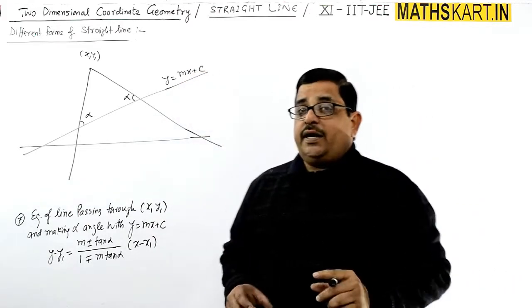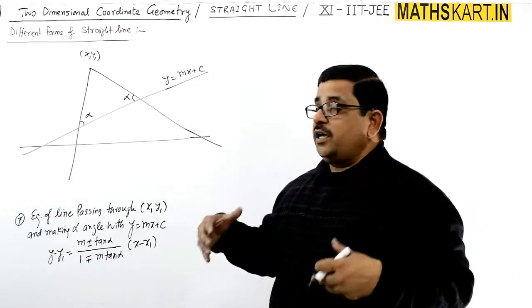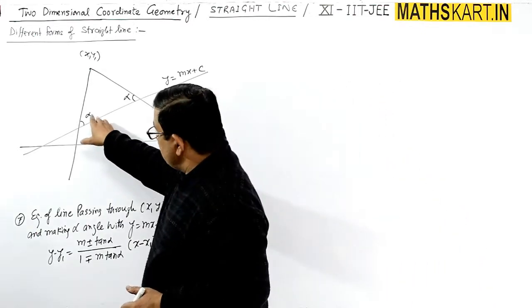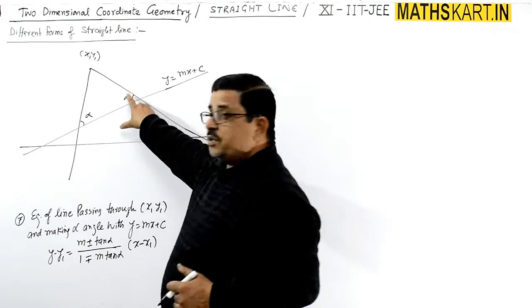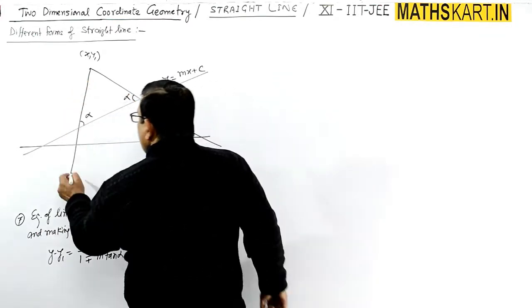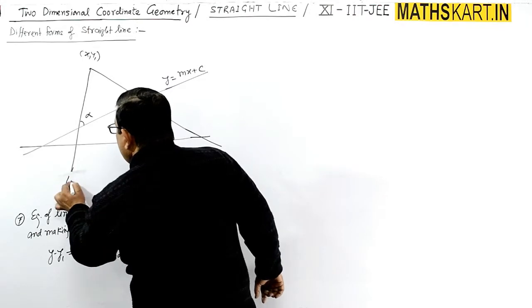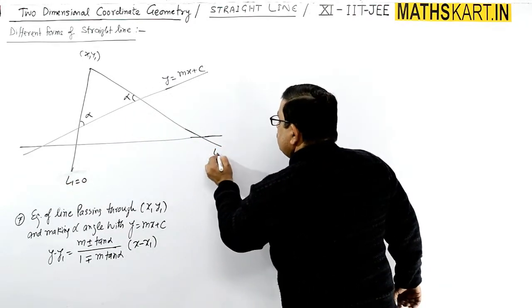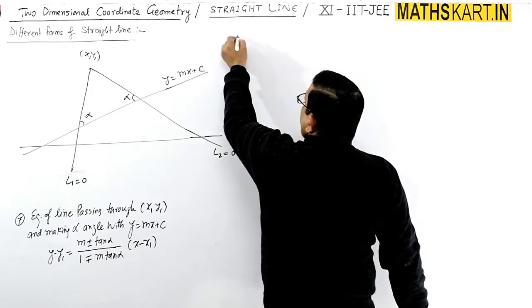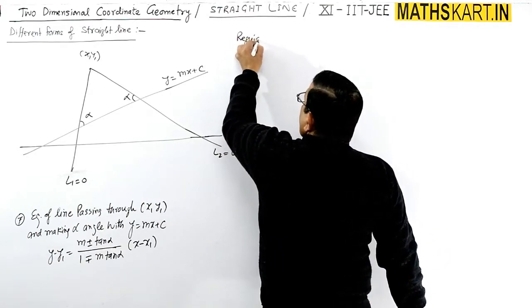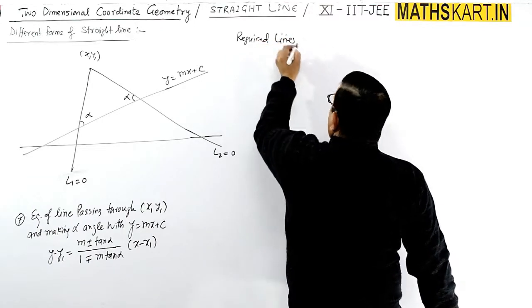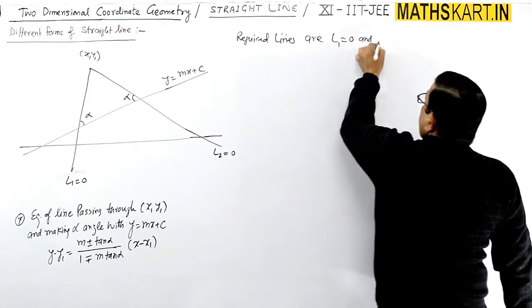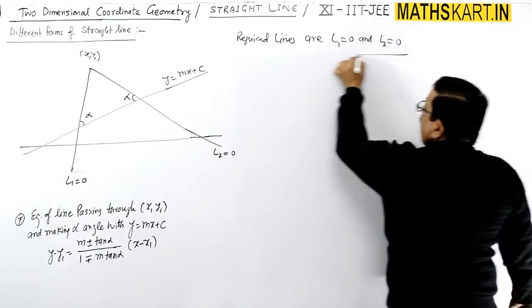The point is that the required line makes angle alpha with the given line. There is a possibility of two lines — L1 = 0 and L2 = 0. So we will derive these two required lines.